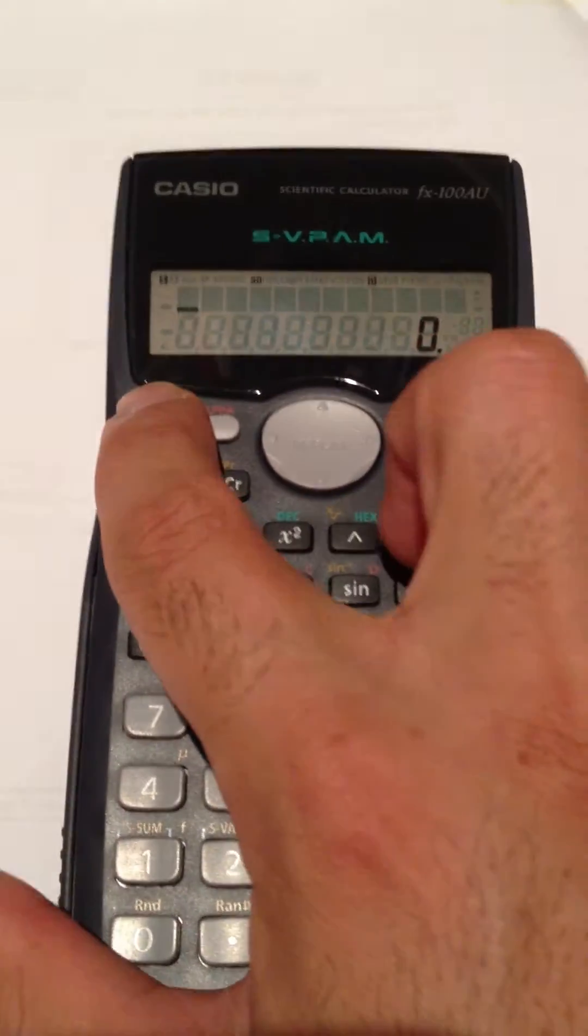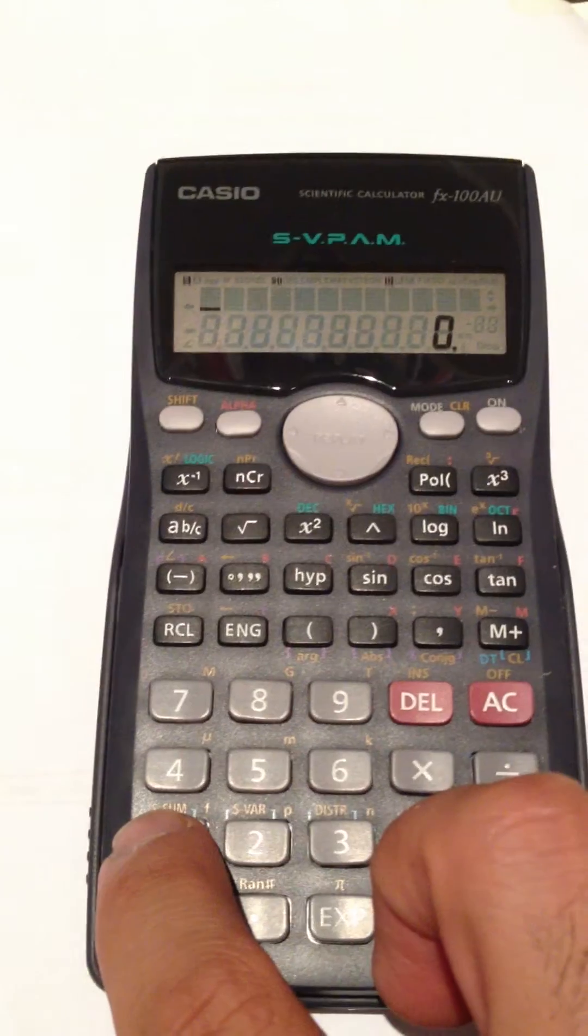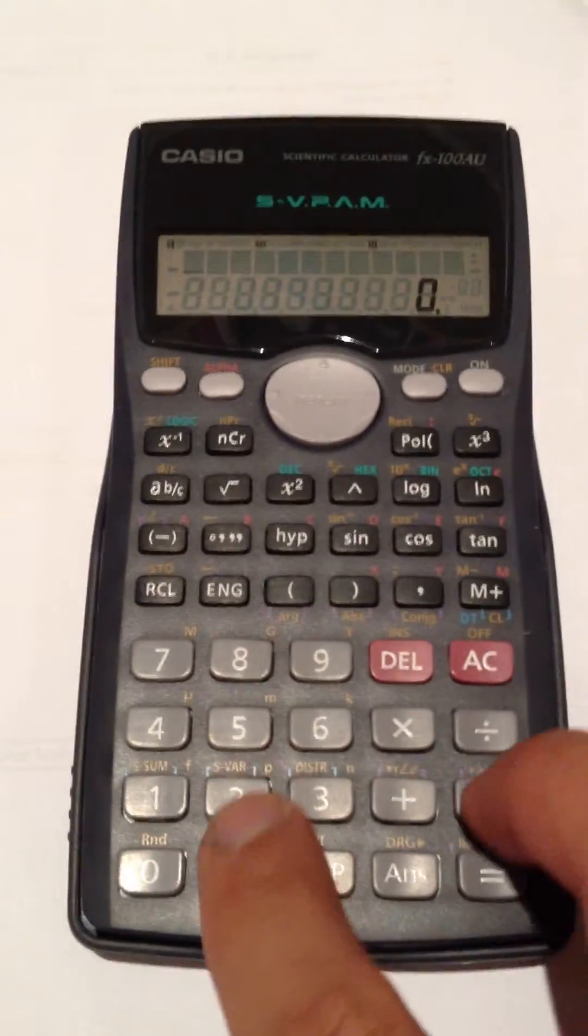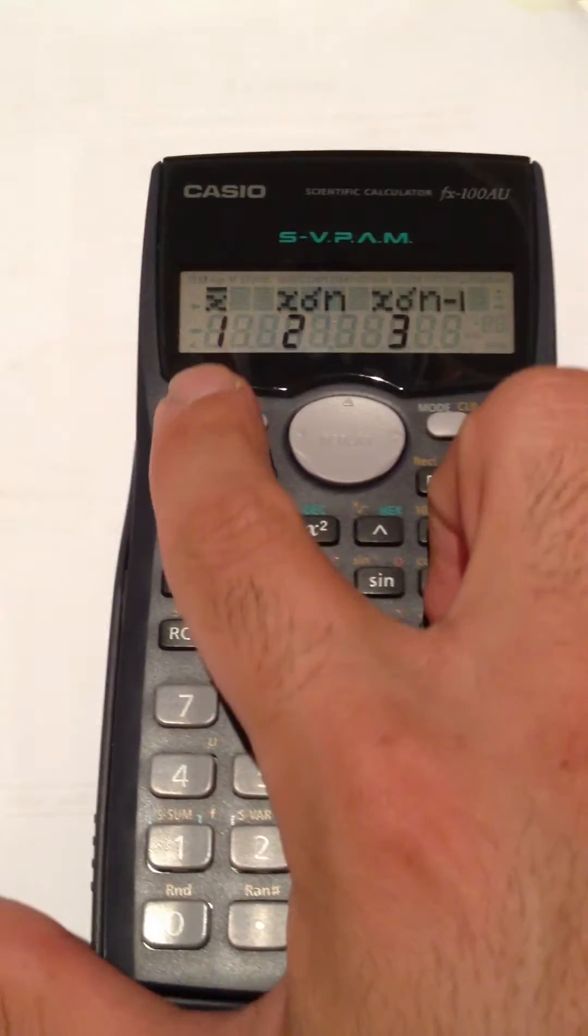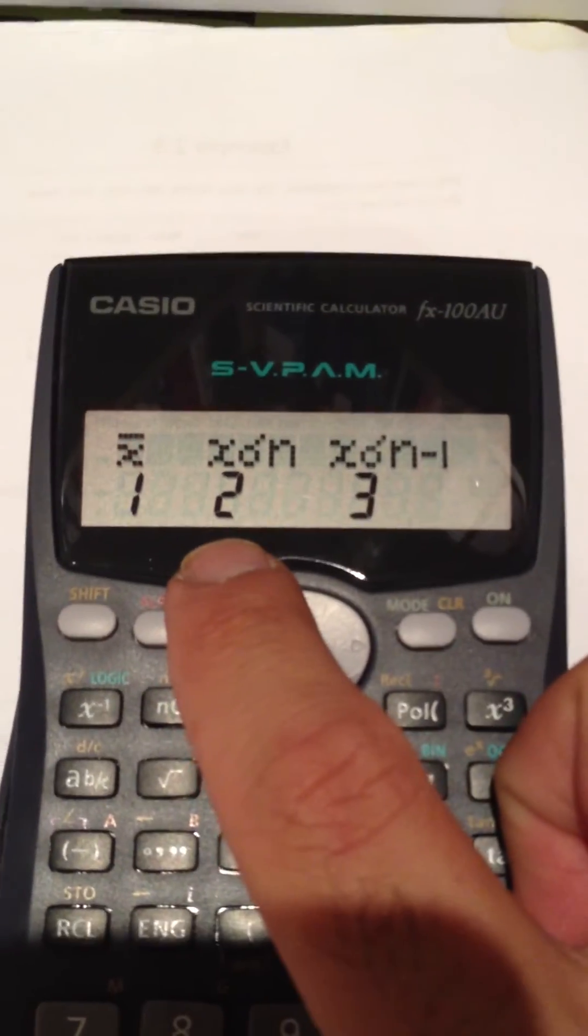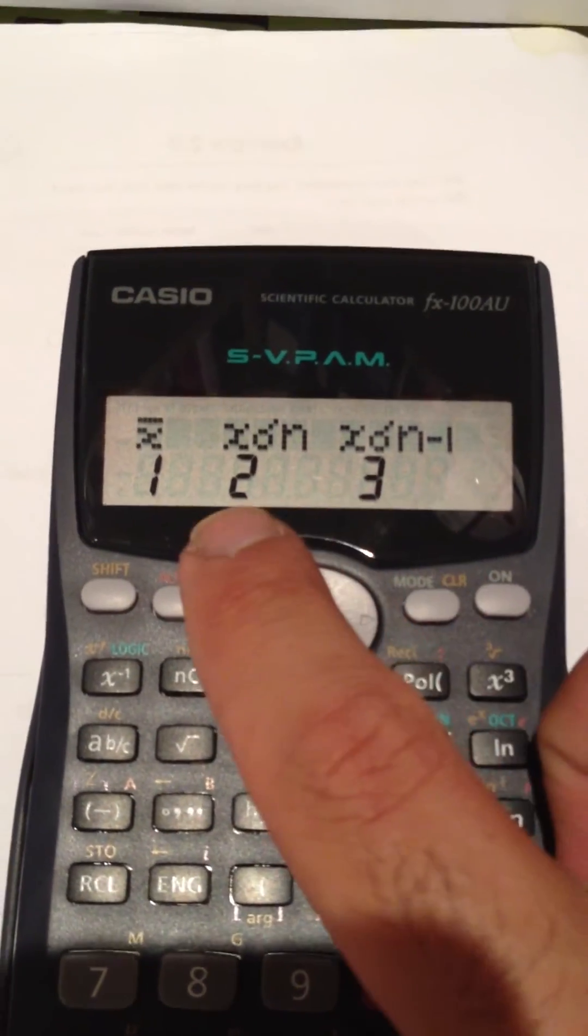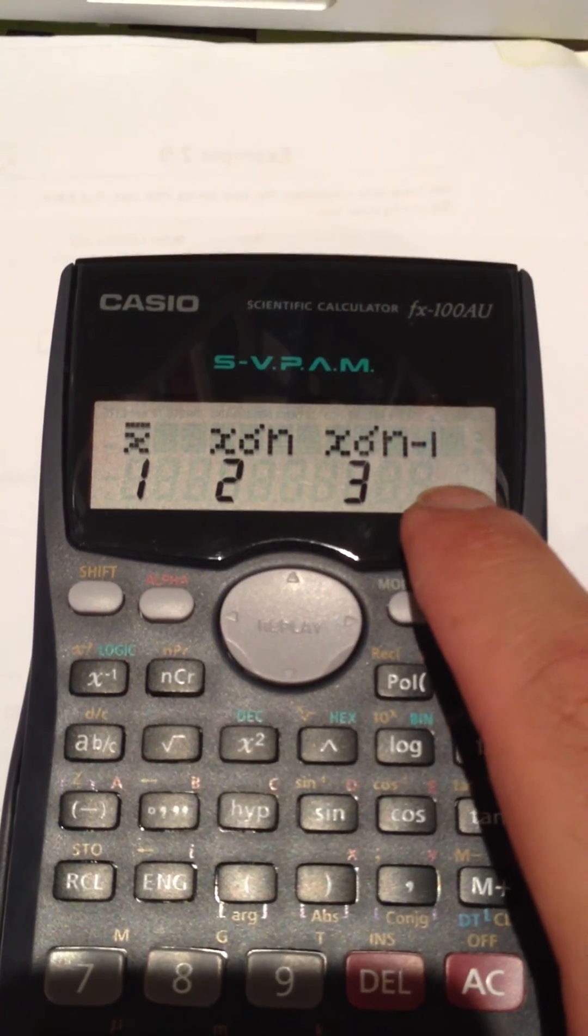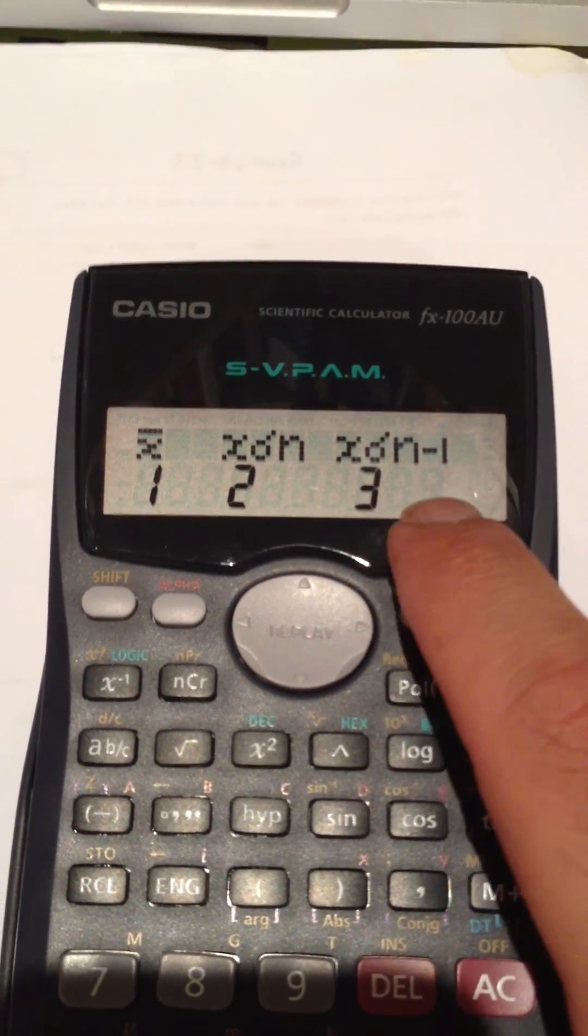You can also hit shift key two, and you've got the mean. Standard deviation of a population is the second key, and the third key is standard deviation of a sample.